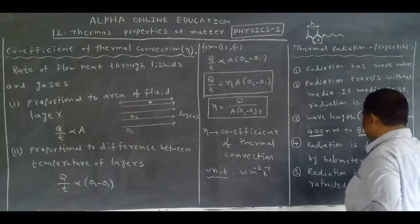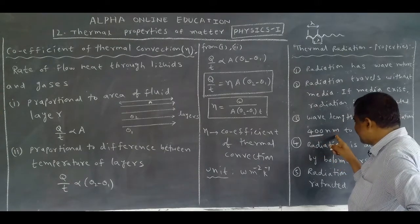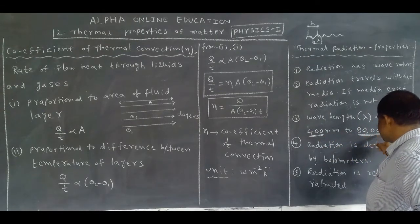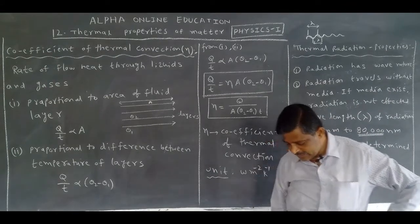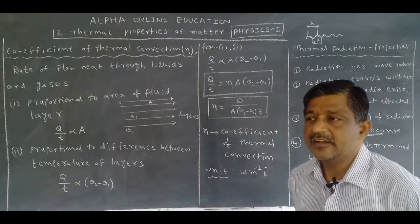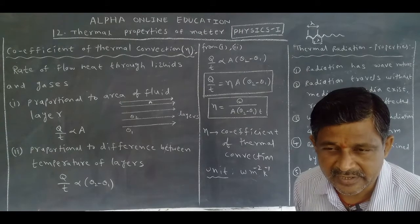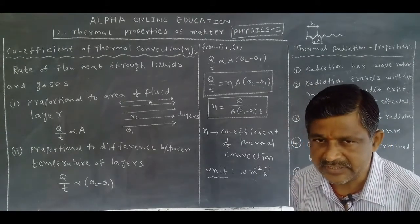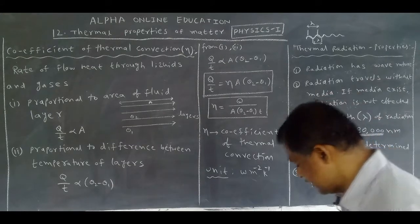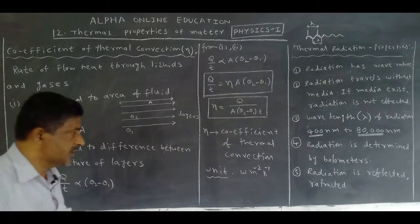The wavelength of radiation ranges from 400 nanometres to 80,000 nanometres. This is very important to remember. The wavelength range is 400 nm to 80,000 nm.